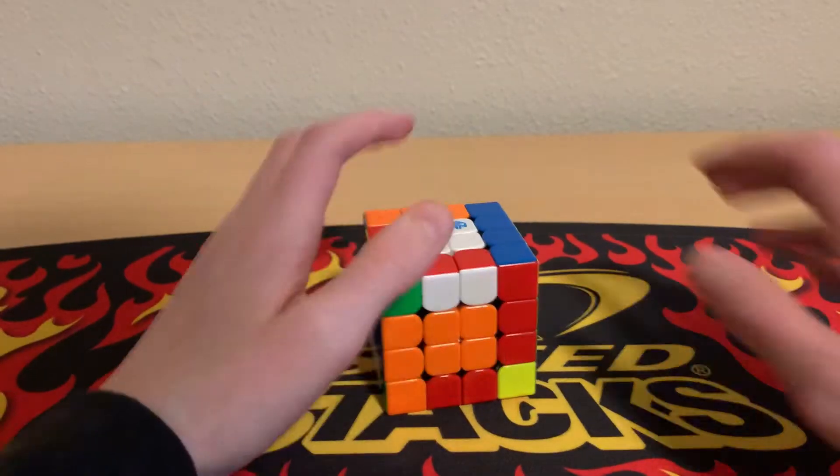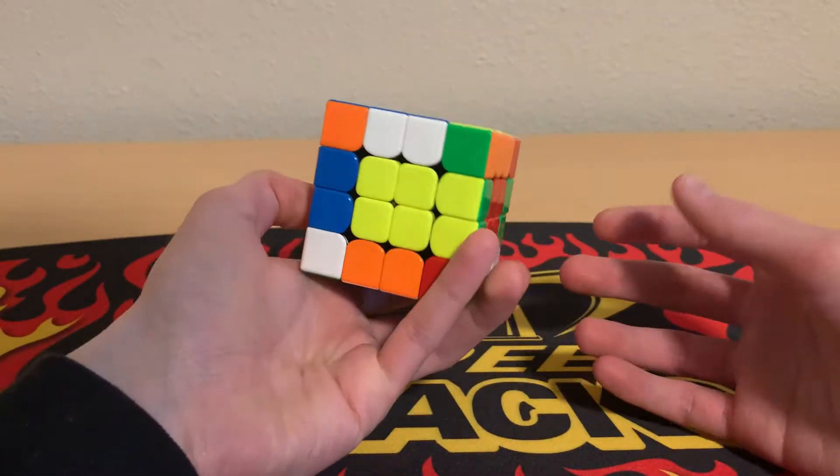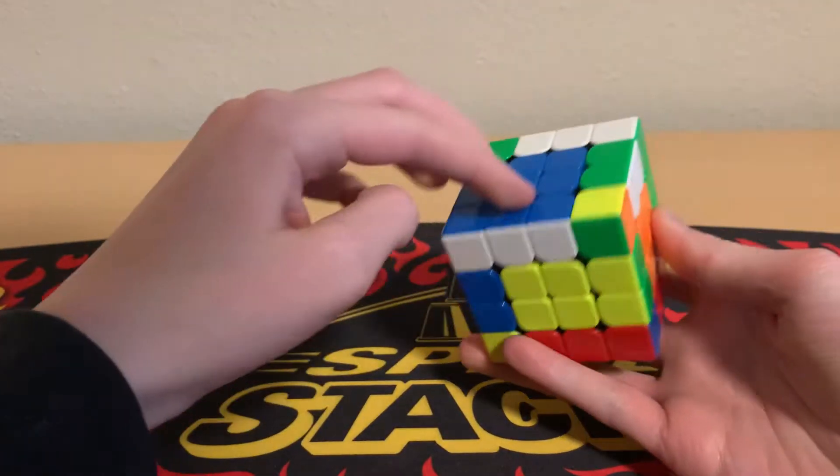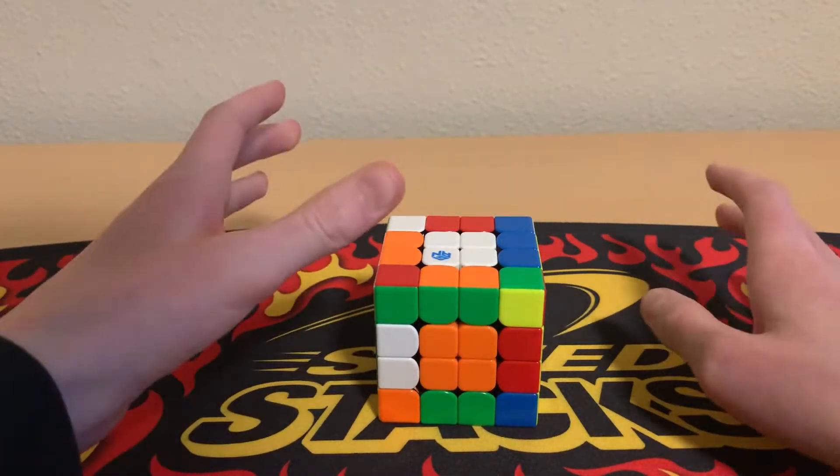Okay, so what you don't want to be doing is reducing it like this into a 3x3 and then solving like first block with Roux. Don't do that. That's very bad.